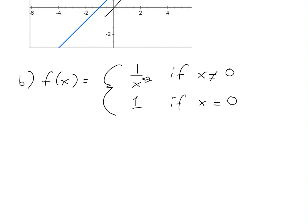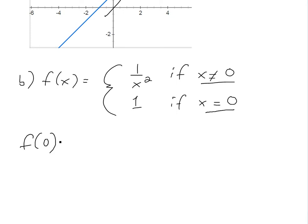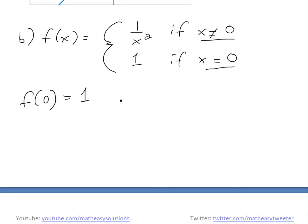Example (b): f(x) = 1/x² if x≠0, and f(0) = 1. So f(0) is defined and equals 1. However, the limit as x approaches 0 of 1/x² does not exist.